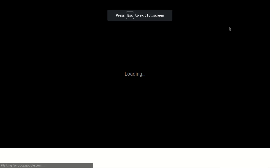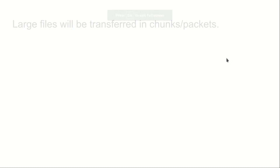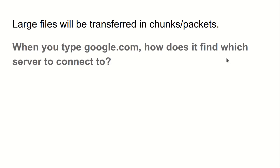Let's close this and move back to the slide show. After that, there is a question: when you type google.com, how does it find which server to connect to? Basically, if you type any website — not just Google — how does it identify which particular server to connect to?